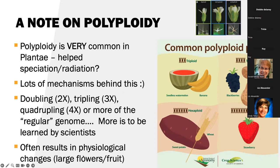What polyploidy does is it often results in physiological changes, which means larger flowers and/or fruit. Up here at the top, you see a diploid, a tetraploid, and then an octoploid — that flower is getting bigger. One of the most common fruits you might eat is a strawberry; compared to the wild type, the octoploid is very, very large. We have wheat, which is a hexaploid, then watermelon — seedless — and bananas are triploid. So I think polyploidy is pretty cool in plants.